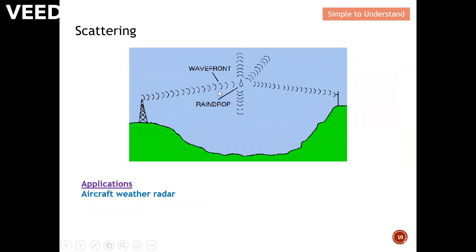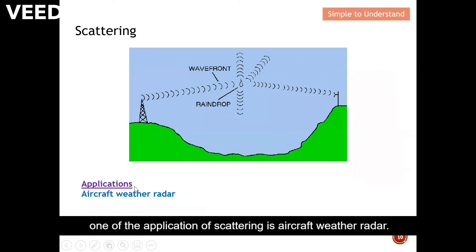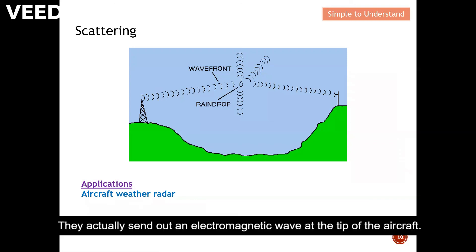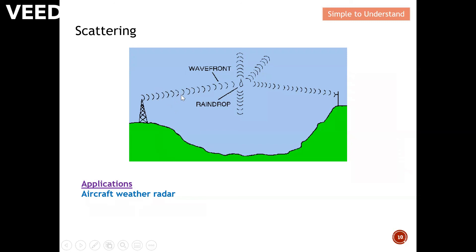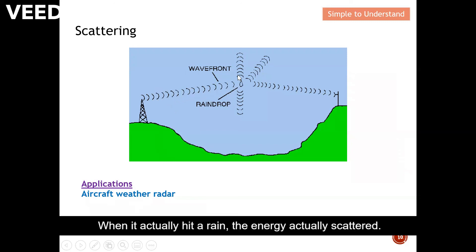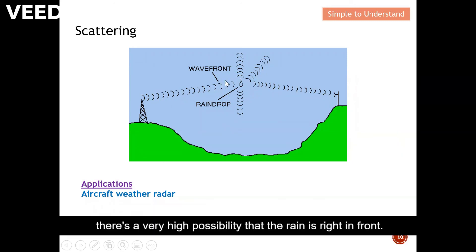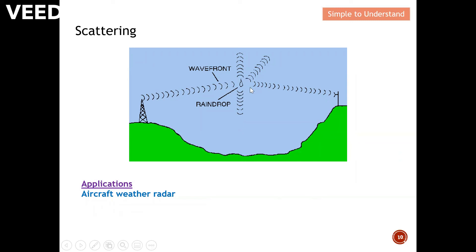Here is another illustration. One of the applications of scattering is aircraft weather radar. When you are onboard an aircraft, sometimes the pilot will tell you about the weather ahead. The pilot knows this by sending out an electromagnetic wave from the tip of the aircraft. When it hits rain, the energy is scattered back, and from that the pilot knows there is a high possibility that rain is right in front. This is the application of scattering.